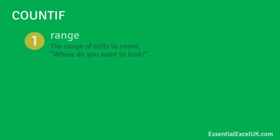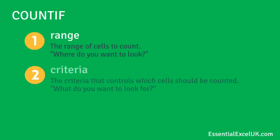The first formula we have is COUNTIF. COUNTIF has two parts to the formula. The first part is range — this is the range of cells to count, or another way to look at it: where do you want to look? The second part is criteria, which controls which cells should be counted, or what do you want to look for. At the bottom you've got the COUNTIF formula in its entirety with range and criteria for your reference.